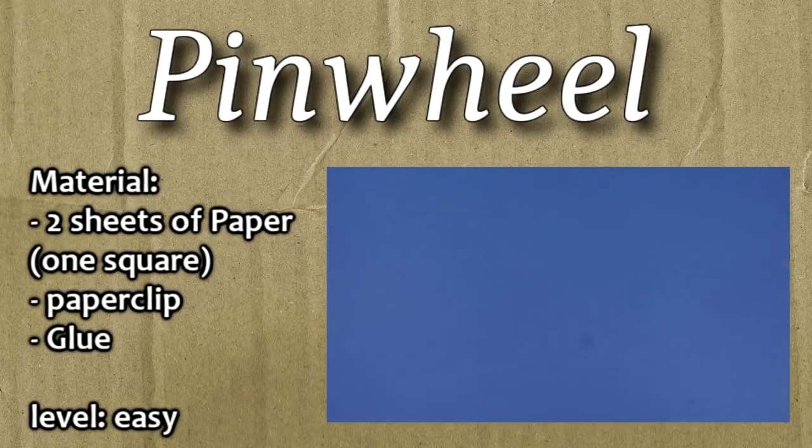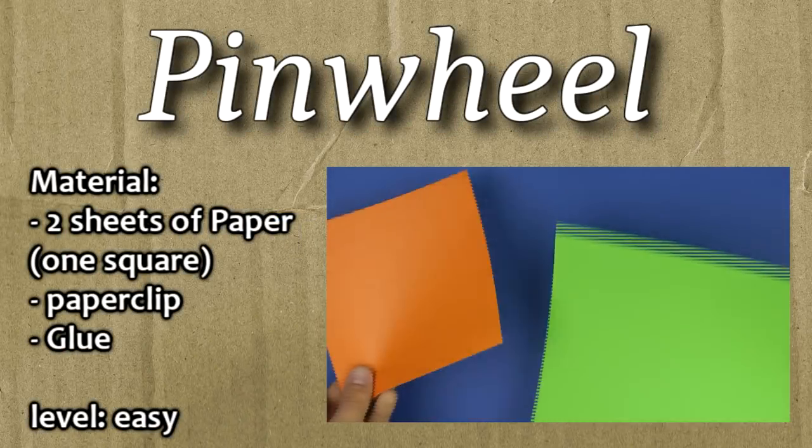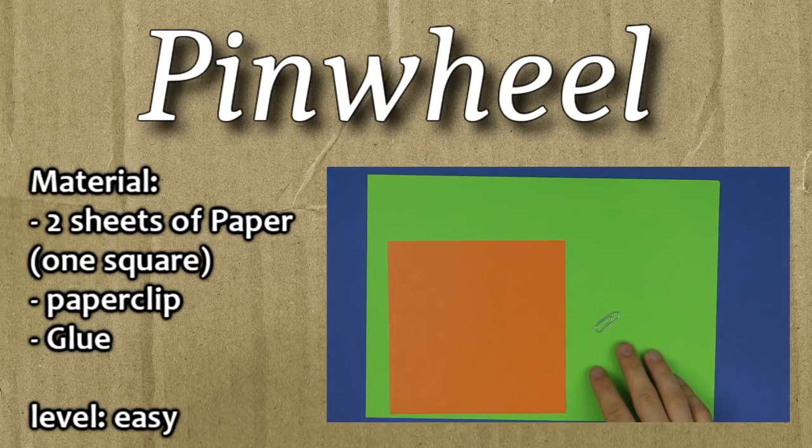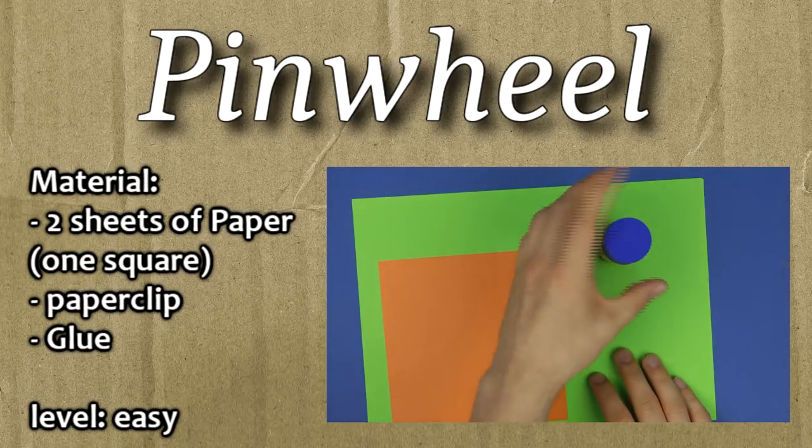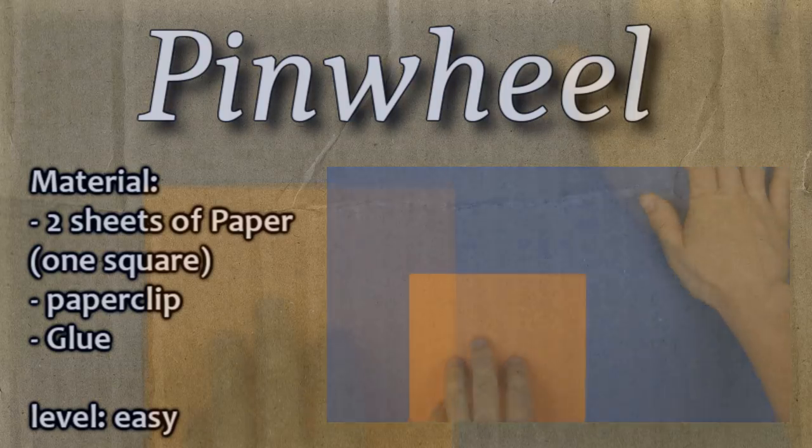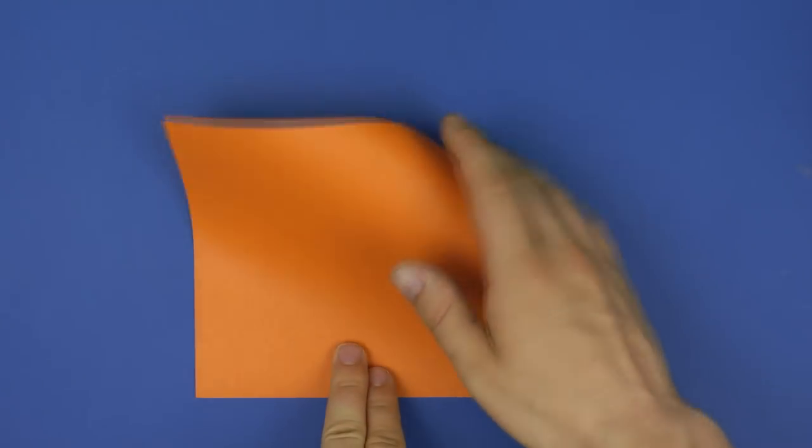For the origami pinwheel we only need a square sheet of paper. If you also want to make a handle and an axis, use another sheet of paper, a paper clip and a glue stick or any glue basically. And we begin by folding our square sheet of origami paper diagonally.